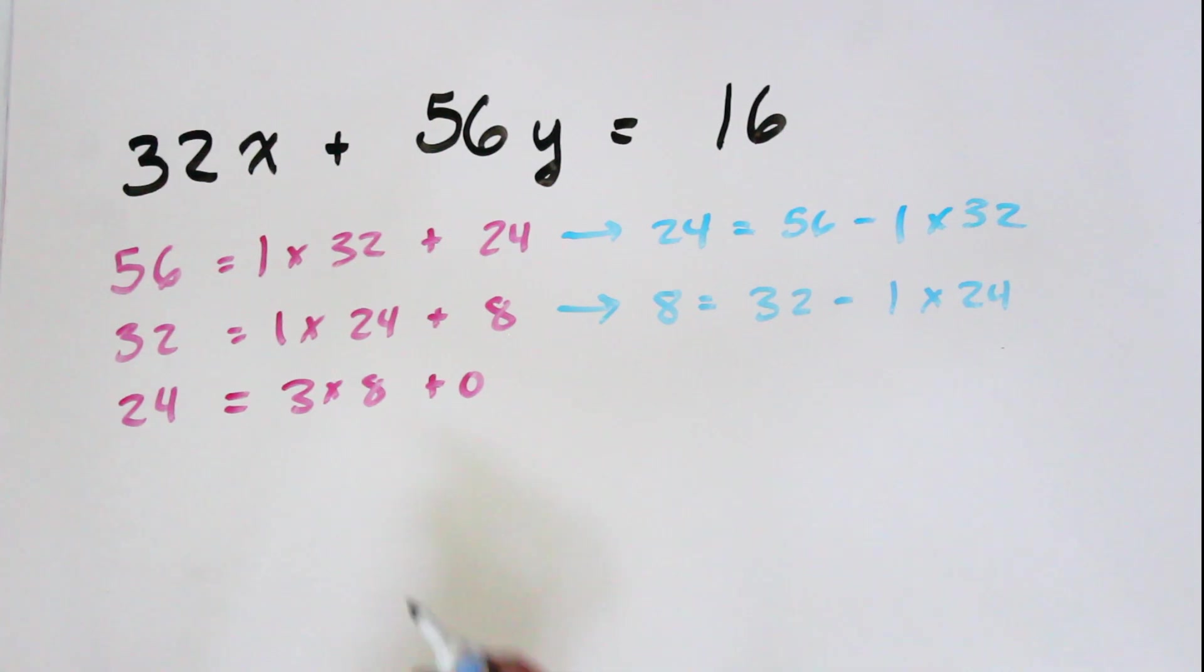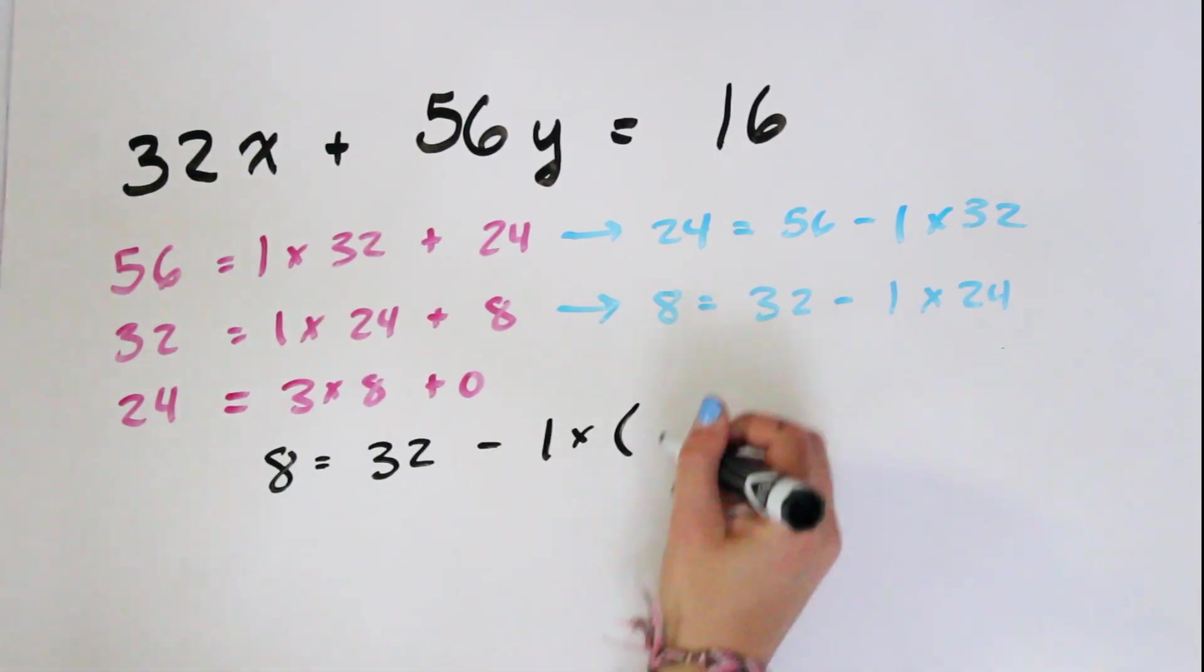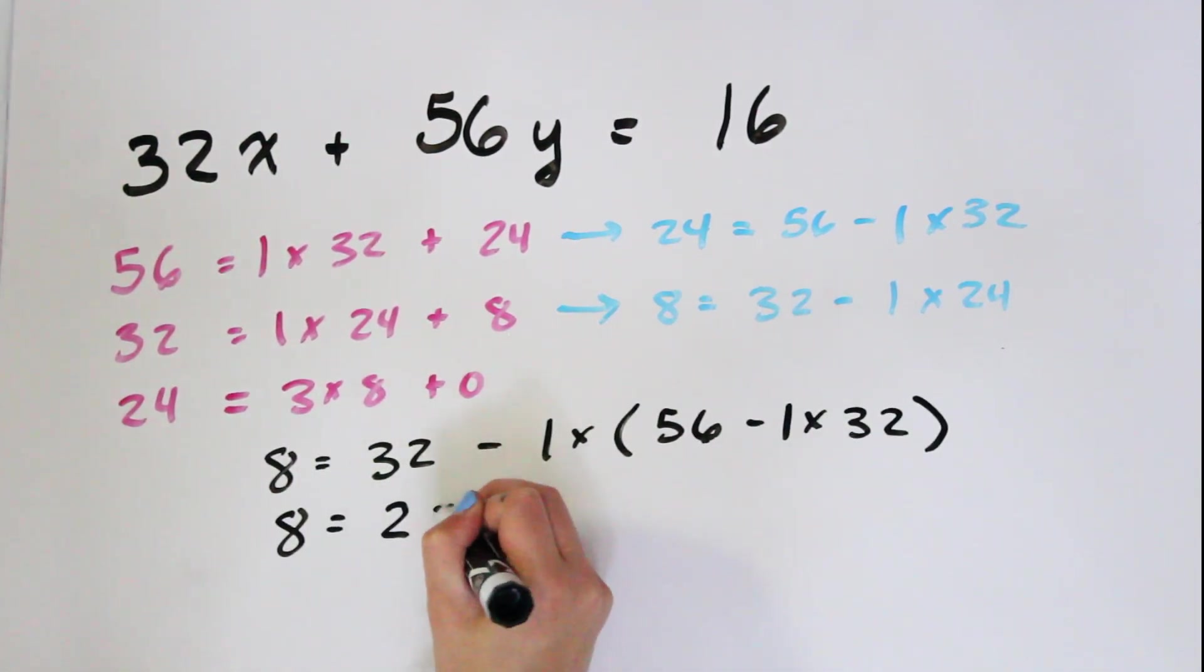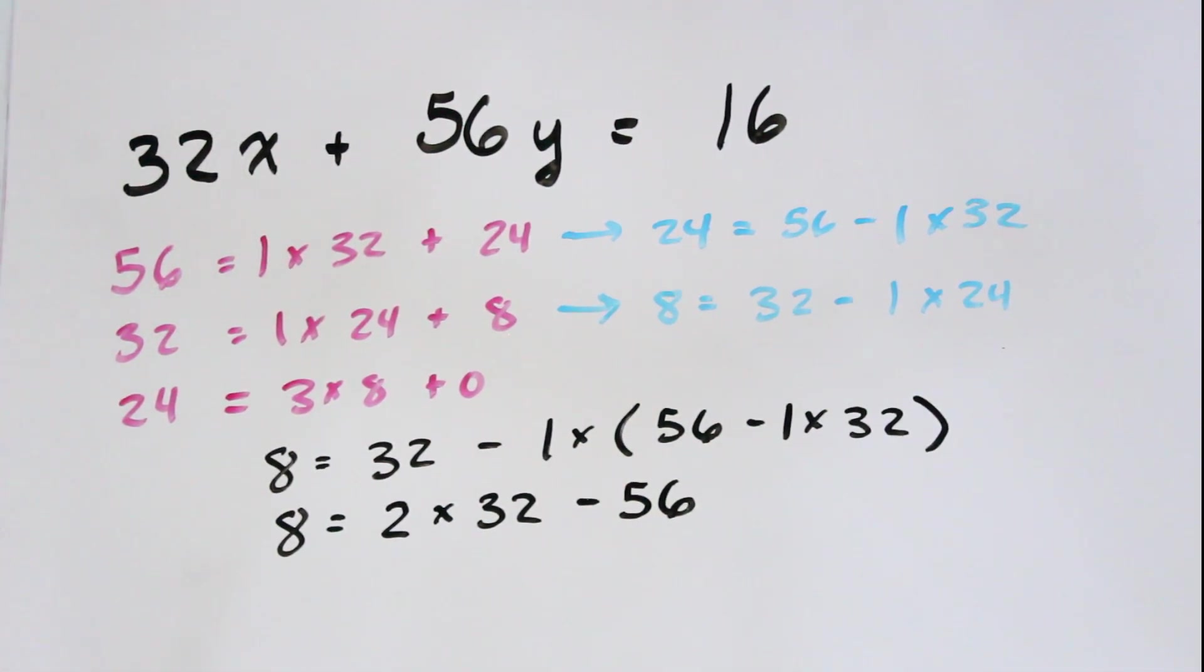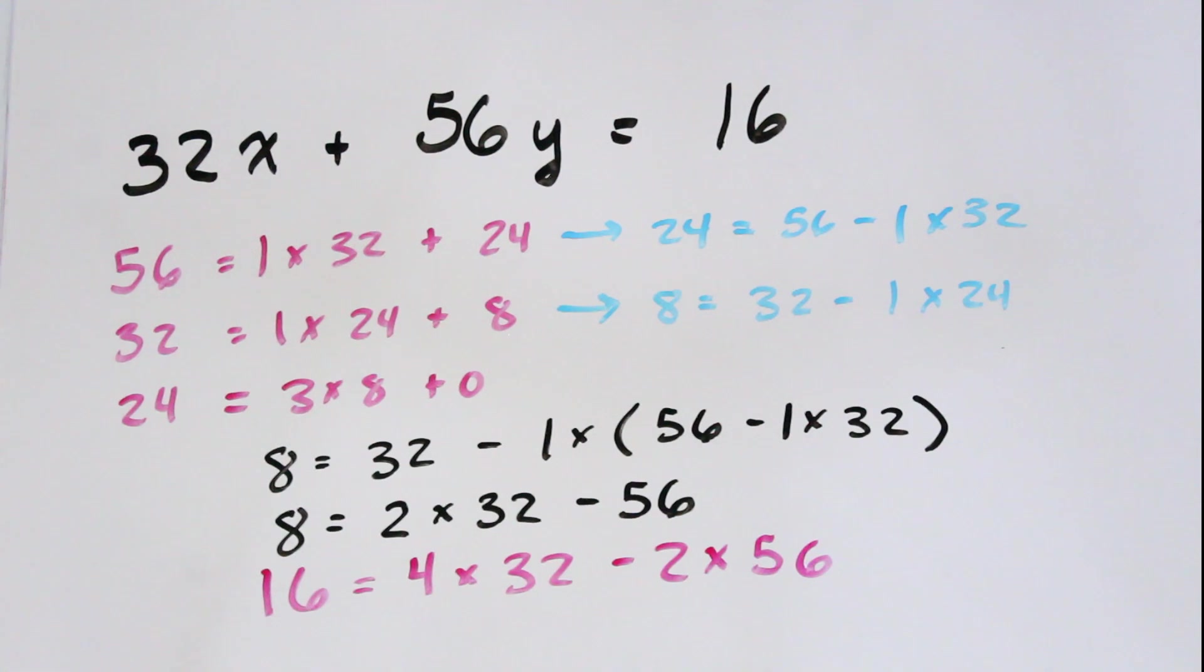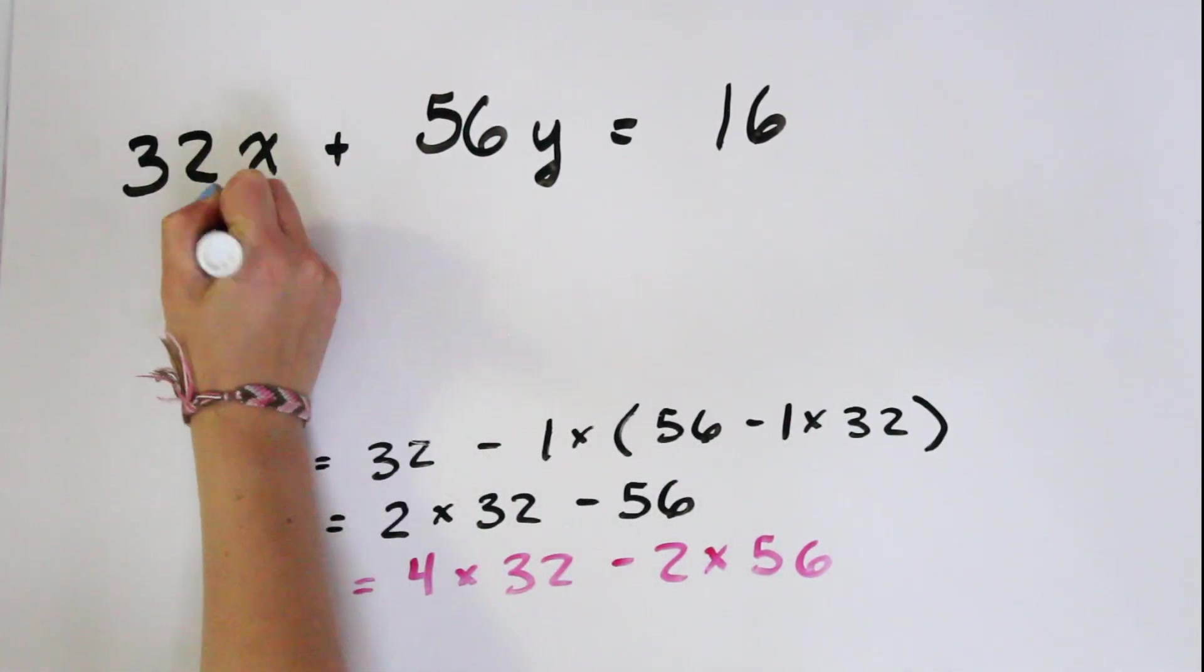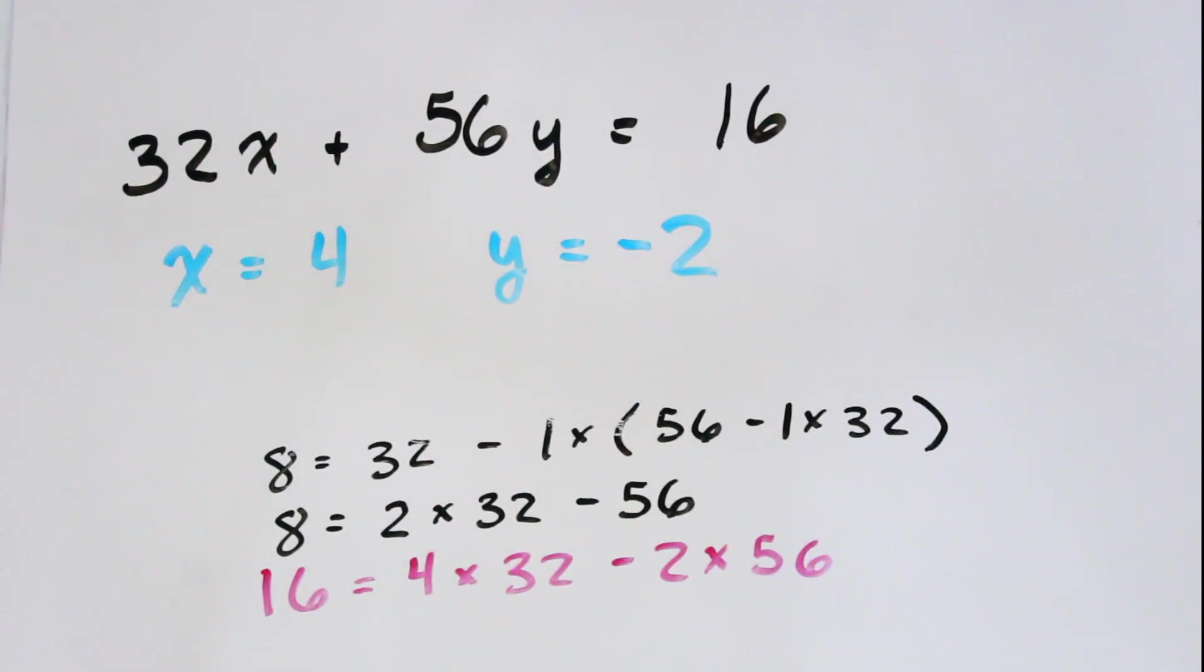So we can backtrack the steps of the algorithm. Solve for the integer at the end. And get out 8 = 32 - (56 - 32). And doing some algebra, we see 8 = 2 × 32 - 56. And since 16 is 2 × 8, we can multiply everything by 2. And we get 16 = 4 × 32 - 2 × 56. So then the solution to this equation is x = 4 and y = -2.